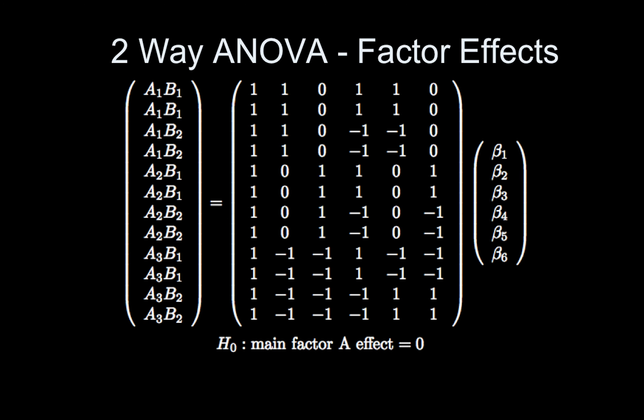Okay, so then the main A effect, you just grab the betas which correspond to the A regressors, so that would be beta 2 and beta 3, and each one is in its own contrast. So this is the contrast matrix. 0, 1, 0, 0, 0, and 0, 0, 1, 0, 0. Okay, so this is the main factor A effect.